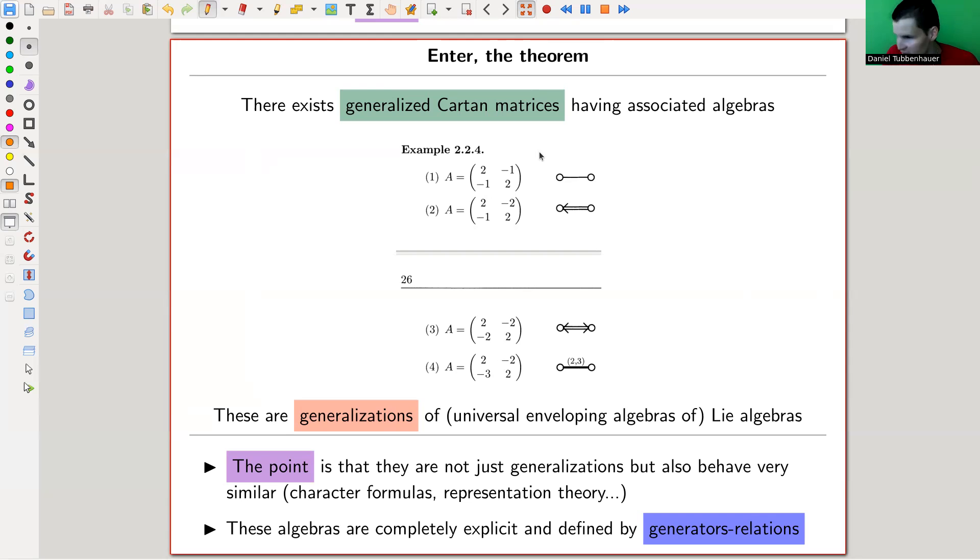They still have essentially the same properties. You can write down character formulas, the representation theory is almost the same. Kac and Moody pushed that very far. In particular, Kac, so that's the famous book by Kac, Infinite Dimensional Lie Algebras. It's ridiculous how far you could push that, just following the analogy of SLN. You do the SL2 story and it pushes very far. The only difference to the classical Lie algebras is that you now allow a more general matrix as input. The Borcherds algebra for the moonshine, for the monster, will be one of those types, but with an even more general matrix.